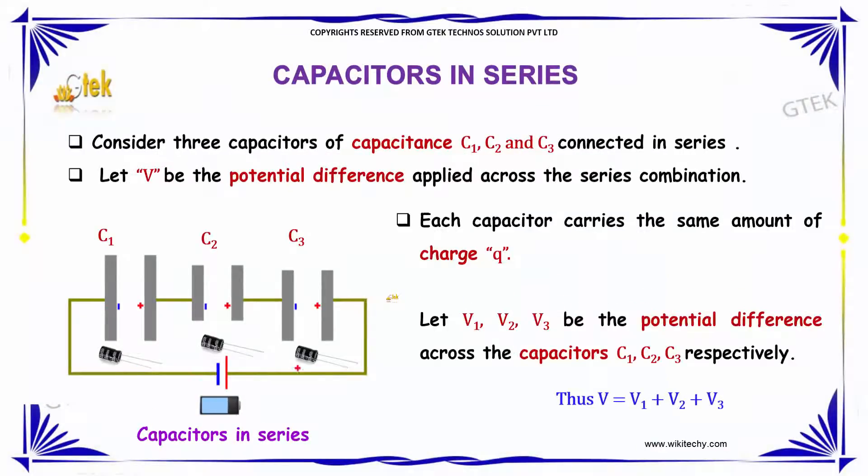Consider three capacitors named C1, C2, and C3 connected in series. Let V be the potential difference applied across the series combination. Each capacitor carries the same amount of charge, plus Q, because they are connected in series.